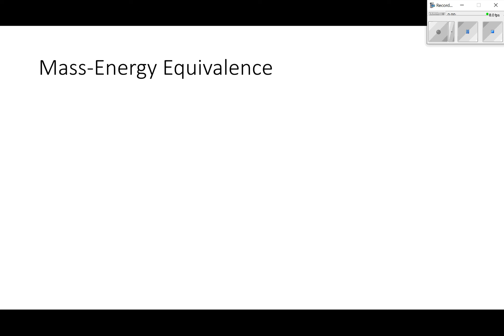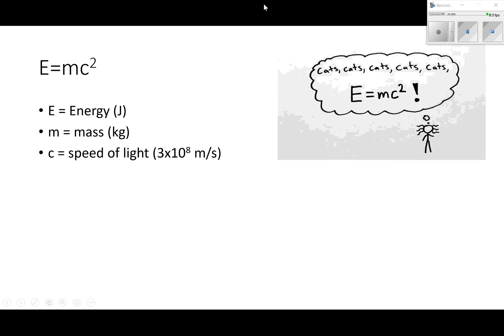Mass, energy, equivalence. This is the famous equation E equals mc squared from Albert Einstein. E is energy in joules, m is mass in kilograms, and c is the speed of light, which is 3 times 10 to the 8th meters per second.